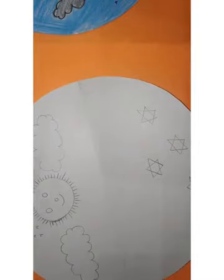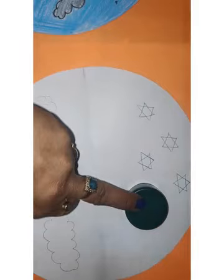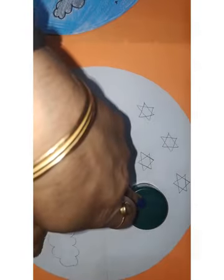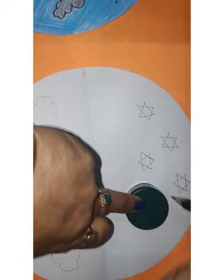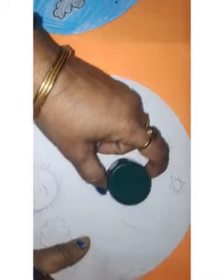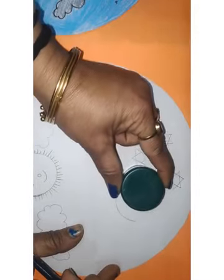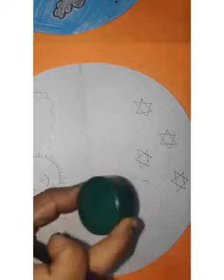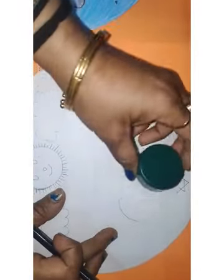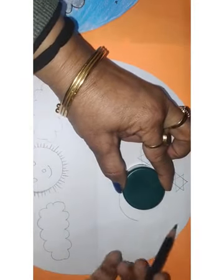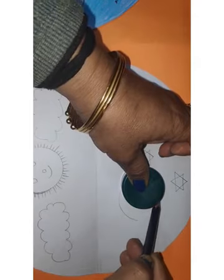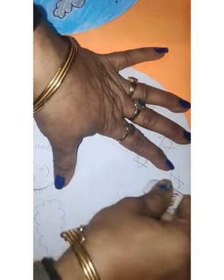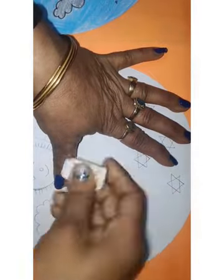Now, one more thing we have to draw — the moon. For the moon, what we will do? First we will draw a circle. Then we will cut this circle into a moon shape. I will place the cap over it — this is a circle I have drawn with the help of this cap. And now I will draw a moon. I will keep the cap here and draw a line, like this. Now I rub the extra line. Moon is ready.